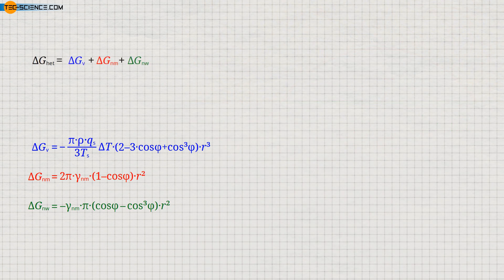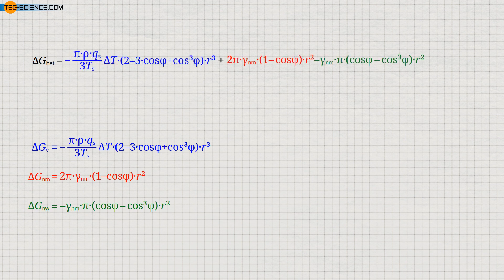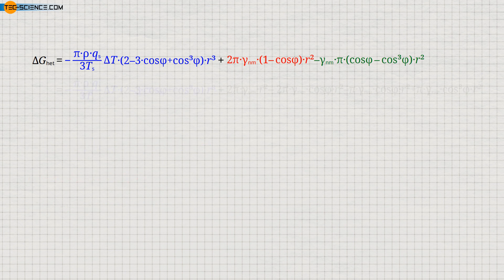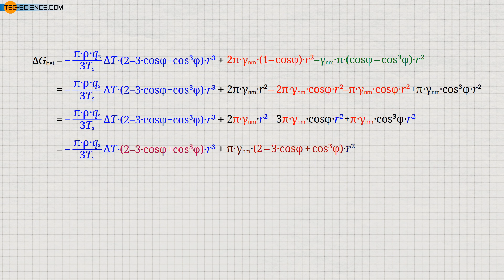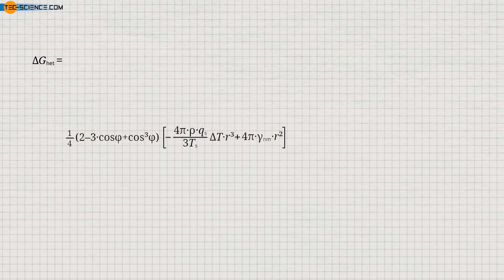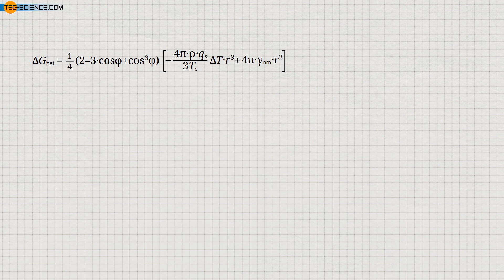We now have all three terms describing the change of Gibbs energy of a nucleus, yielding the combined formula. To simplify, we first multiply out the brackets in the relevant terms, then combine the terms marked in red. Factoring out the product of the surface tension, pi, and the square of the radius, and then factoring out the expression marked in red, we obtain the simplified formula. Finally, extending this formula by a factor of 4, the change in Gibbs energy for heterogeneous nucleation is given by the indicated equation.